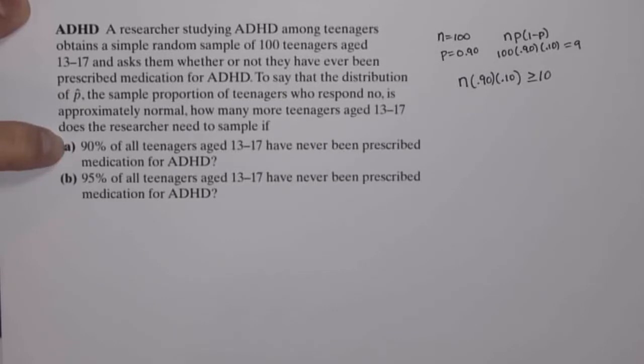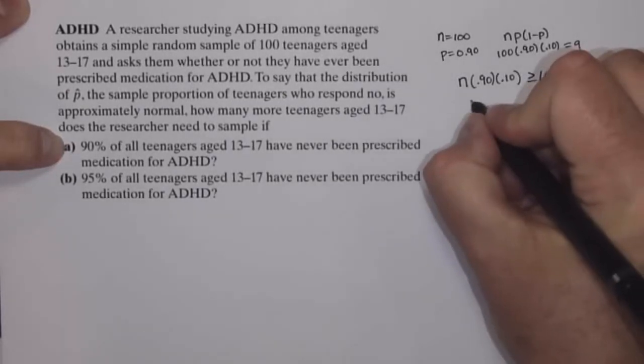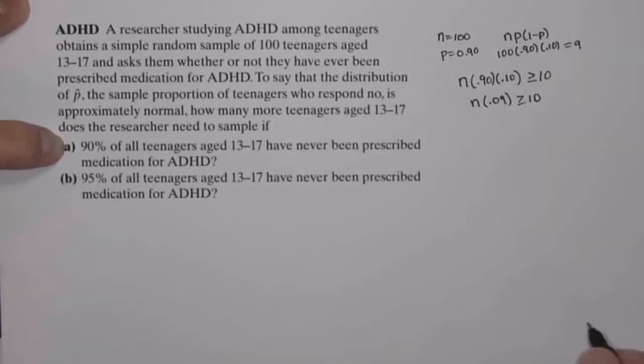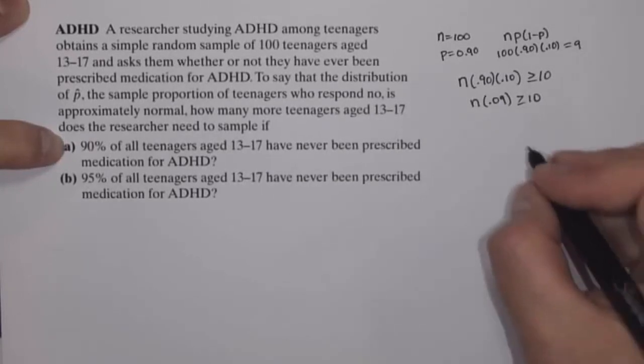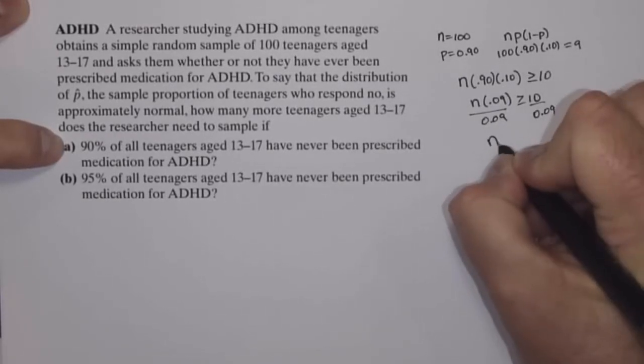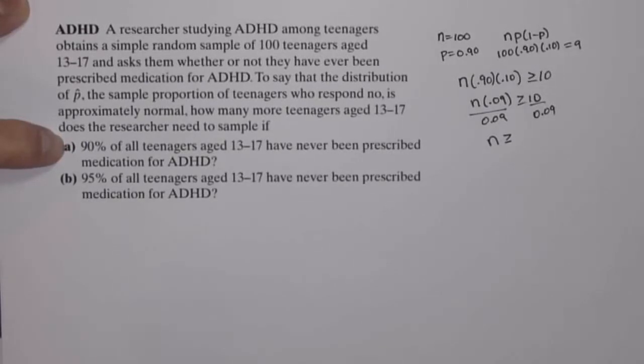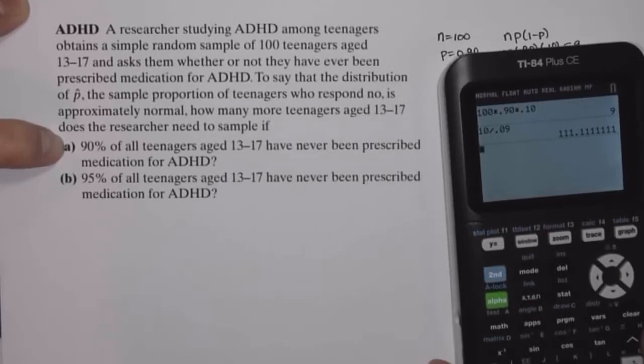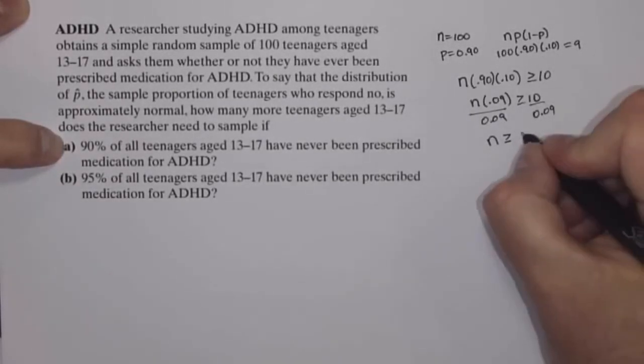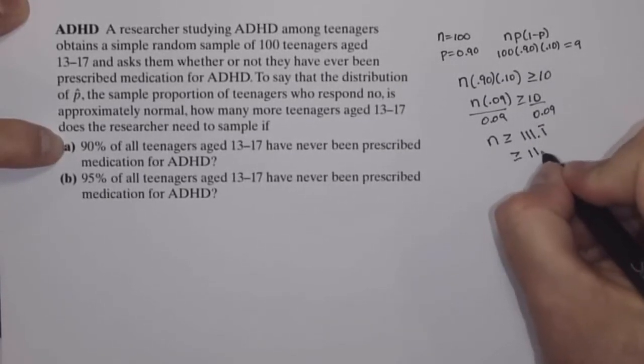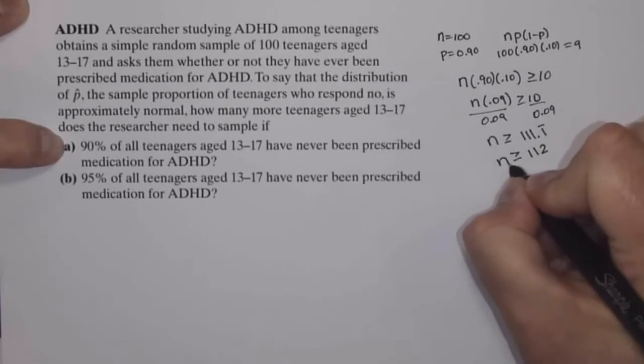Well, 0.90 times 0.10 is 0.09, so I would have n times 0.09 greater than or equal to 10. If I divide both sides by 0.09, then n would have to be greater than or equal to 10 divided by 0.09, which is 111.11 repeating. That means I would need to have a sample size of 112 or more.